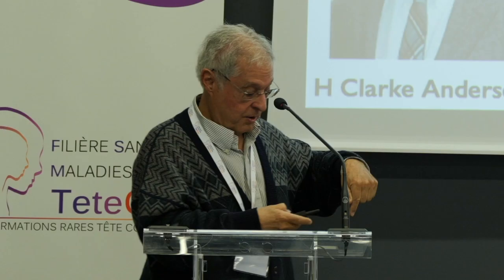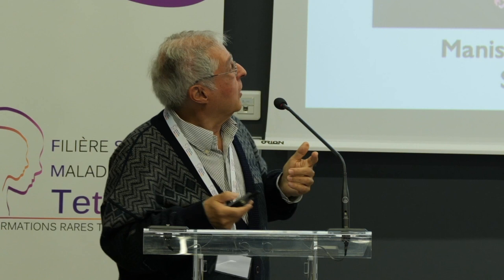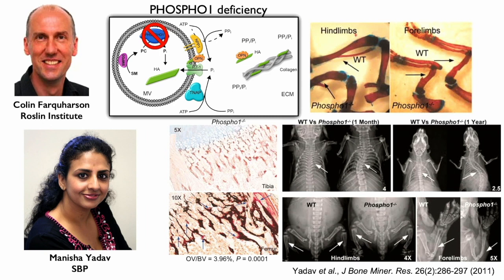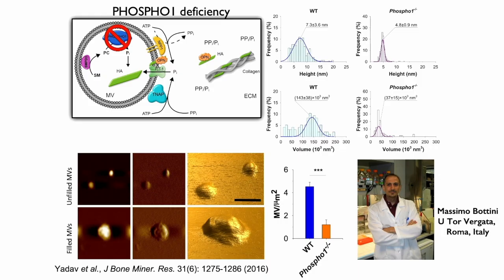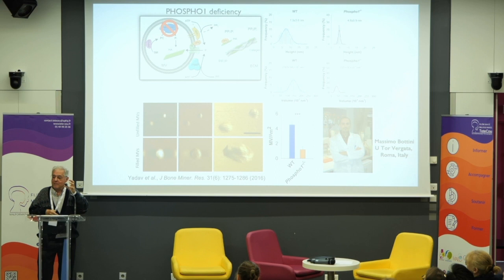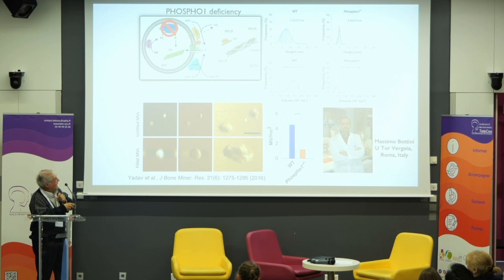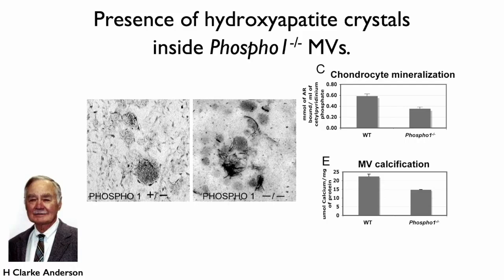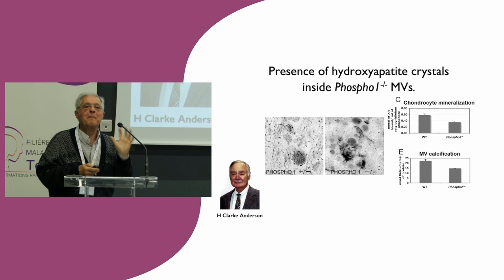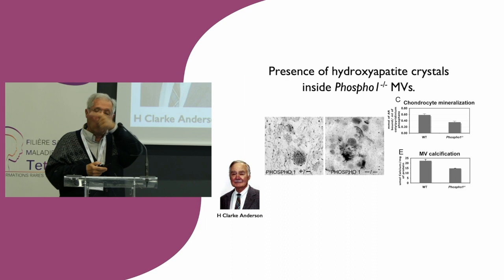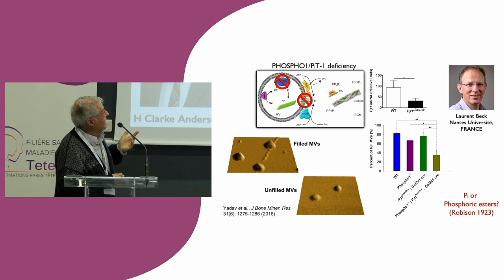This made us think that there must be another enzyme producing phosphate within the matrix vesicles. That led us to work with Colin Farquharson, who had discovered phospho-1, and Manisha Yadav in my laboratory. Knocking out phospho-1 gives osteomalacia, scoliosis, spontaneous fractures. With Massimo Bottini, we found that matrix vesicles are formed in fewer numbers, and the matrix vesicles produced essentially lack mineral and are much smaller in size. Yet with Clark Anderson, we found they still have mineral inside. So we thought we must be missing something — there must be a mechanism that can bring phosphate in, either another enzyme or a transporter. This led us to work with Laurent Beck at Nantes University, who provided us with PIT-1-deficient animals.